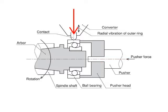The contact velocity sensor is placed against the outer ring to detect vibrations.